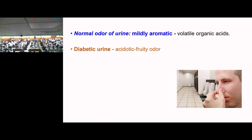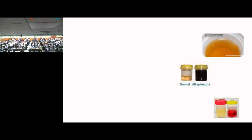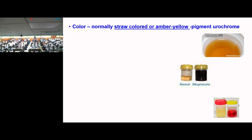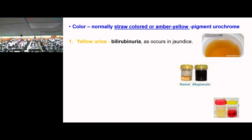The odor of urine is mildly aromatic because it contains volatile organic acids. In diabetic ketoacidosis, urine has an acidotic fruity odor. Normally, urine color is straw-colored or amber yellow, due to the pigment urochrome. Deep yellow colored urine is seen in jaundice due to bilirubinuria.